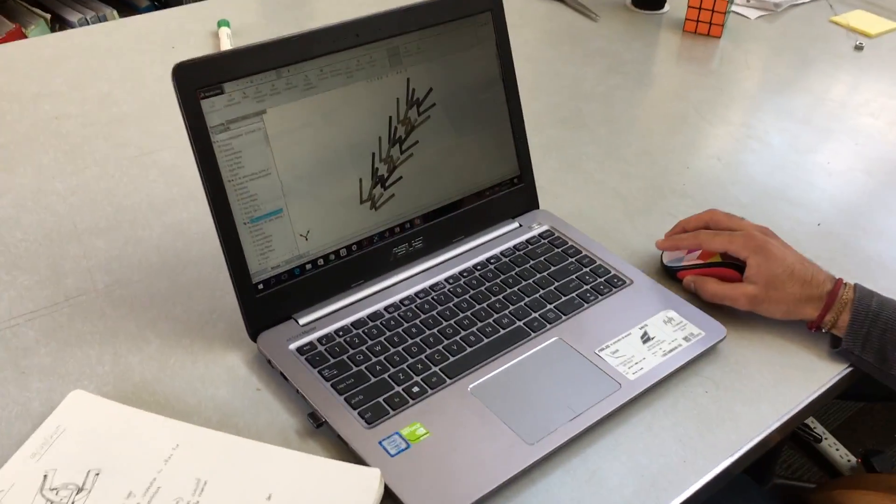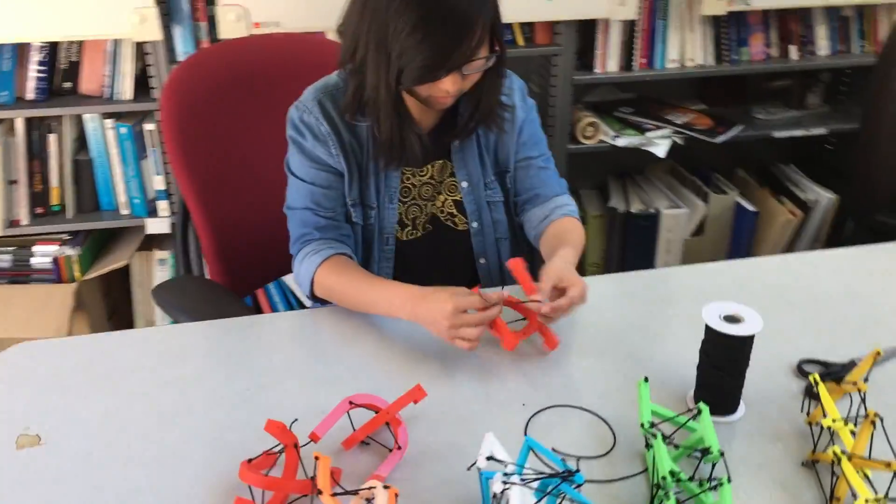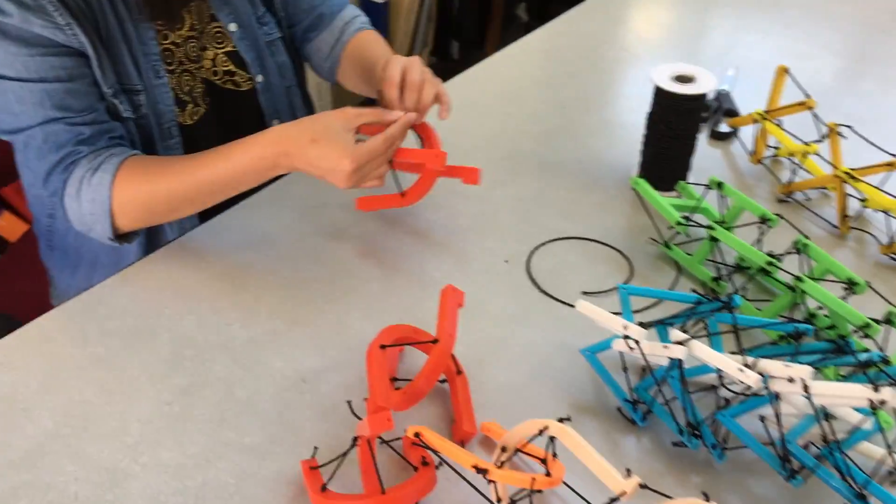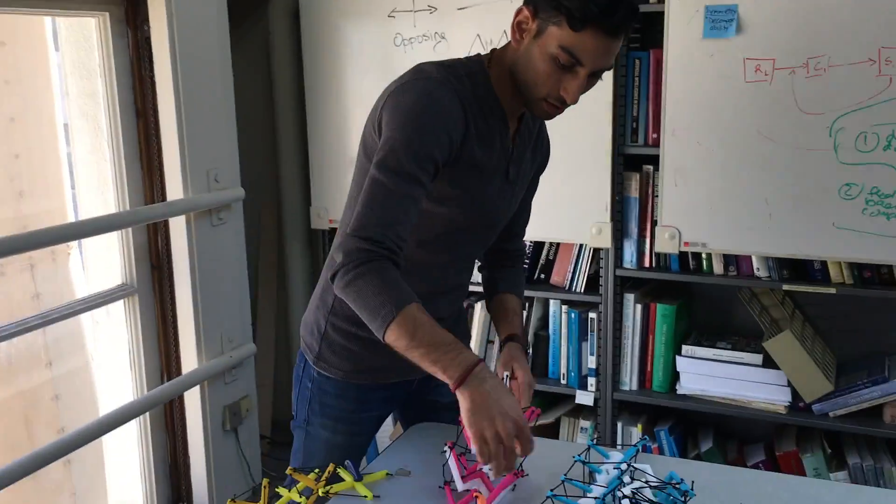We first designed and developed several new tensegrity spines with increased flexibility. With rapid prototyping, we iterated and created physical concepts with 3D printed members and elastic cording. These prototypes were tested based on how well they met the needs of the user.